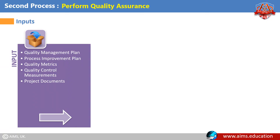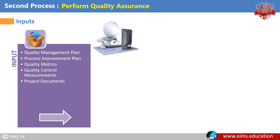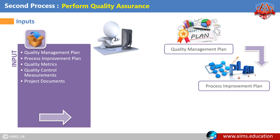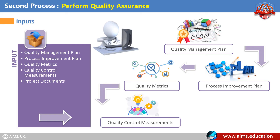Inputs for Perform Quality Assurance come from Plan Quality Management and the Control Quality processes. They are: Quality Management Plan, Process Improvement Plan, Quality Metrics, Quality Control Measurements, and Project Documents.